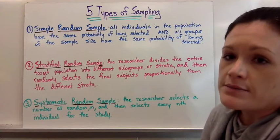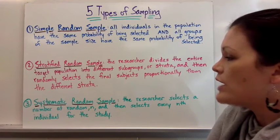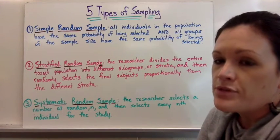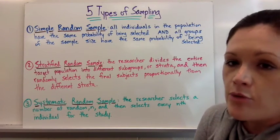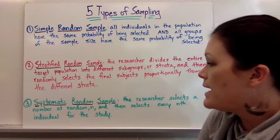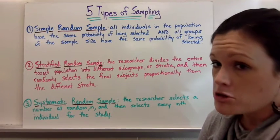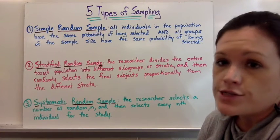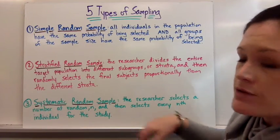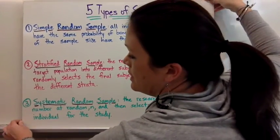A systematic random sample is when the researcher selects a number at random and then selects every nth individual for the study. For example, they might stand at an airport and ask every fifth person that walks through the door a question — like how many carry-on bags do they have or what airline they're choosing. They count until the fifth person comes by, then ask them.